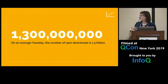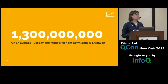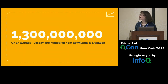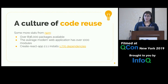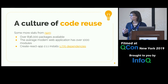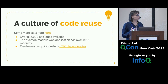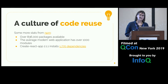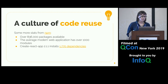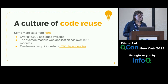So what exactly is going on here? NPM has some great stats. They say there are over 1.3 billion downloads of NPM packages on an average Tuesday. JavaScript has this rich culture of code reuse. There are over 800,000 packages in NPM, making it the largest open source code repository in the world. And the average modern web application has over 1,000 dependencies.